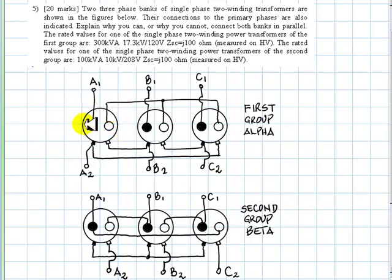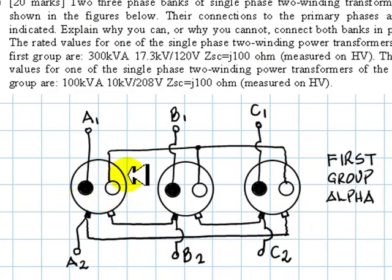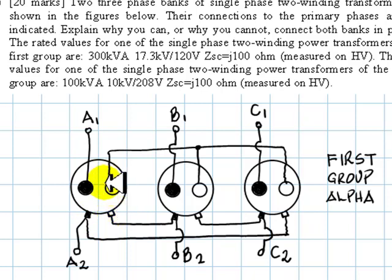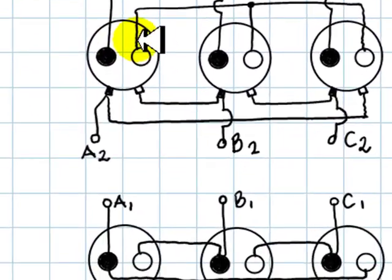The rated values for one of the single-phase transformers of the top group (Group Alpha) are: 300 kVA power rating, 17.3 kV on the high-voltage coil, 120 volts on the low-voltage coil. The short-circuit impedance of this transformer is j100 ohms measured on the high voltage side.